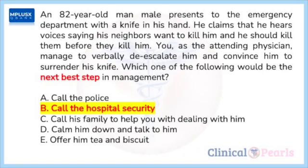Option C: calling his family will provide an opportunity to obtain more information about his medical and psychiatric history, however security and safety comes first. Option D: verbal de-escalation to calm the patient, or measures to establish rapport such as offering tea and biscuits, is appropriate only after the threat is eliminated or controlled.